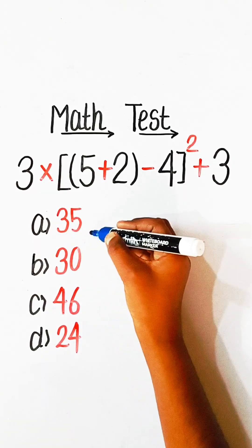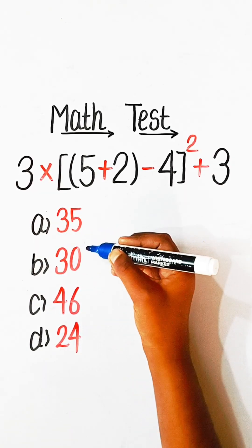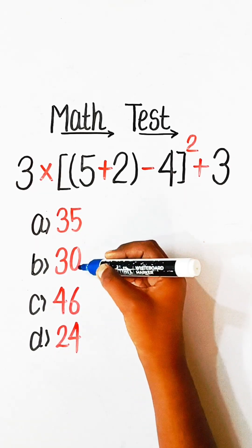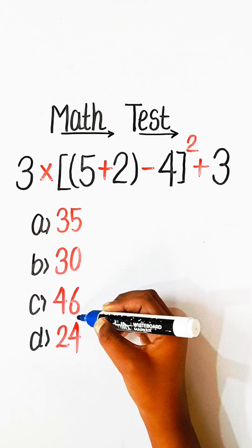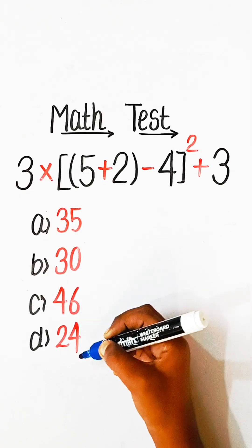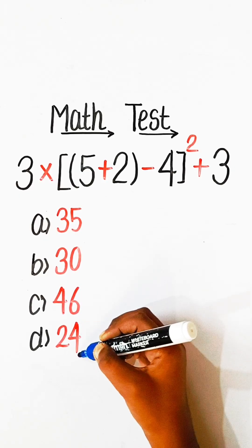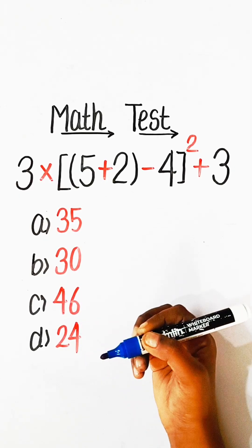Option A: 35. Option B: 30. Option C: 46. Option D: 24.